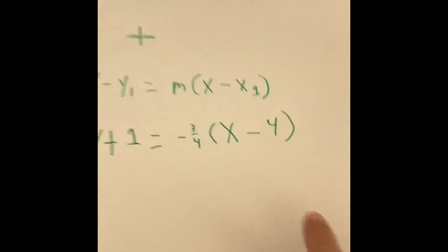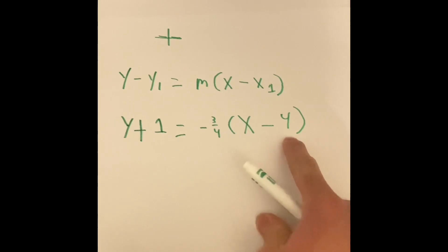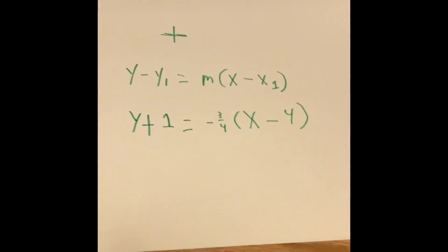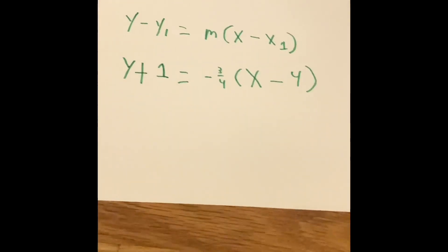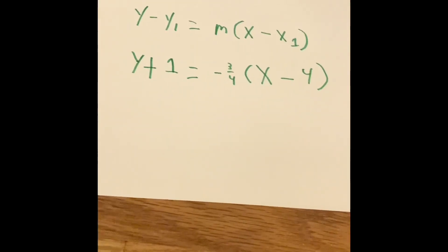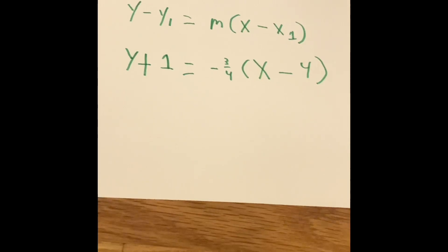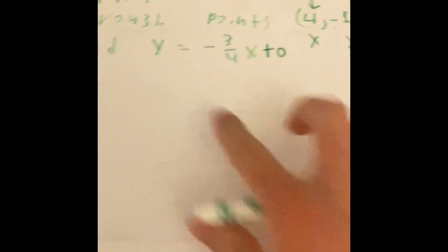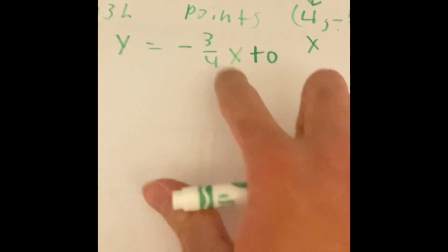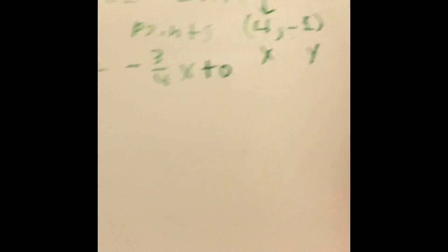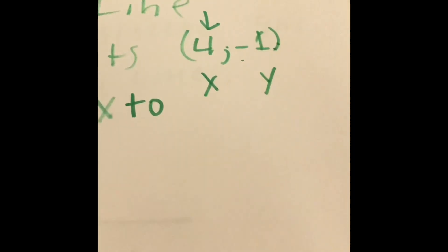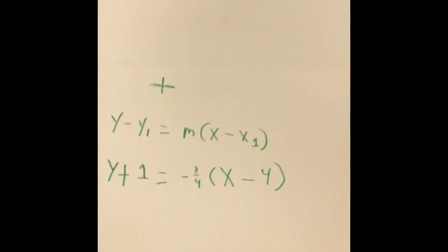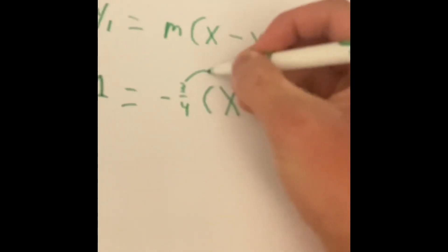This is what it should look like when you put your information into the formula. When we do the math and simplify this equation, we're going to get our new slope intercept form — an equation that should be parallel to y equals negative 3 over 4 x plus 0. What we're going to do here is the distributive property.